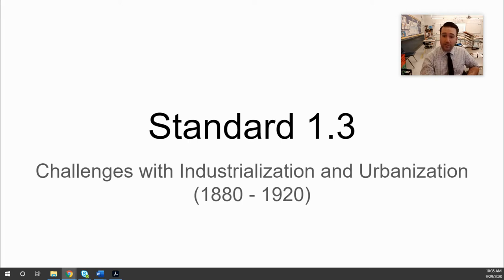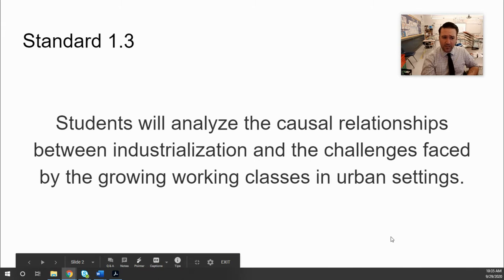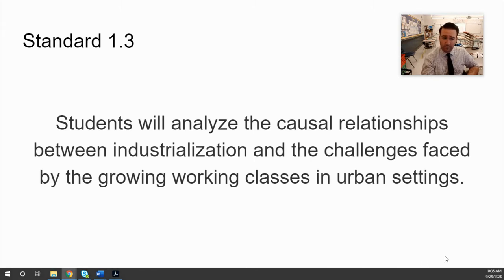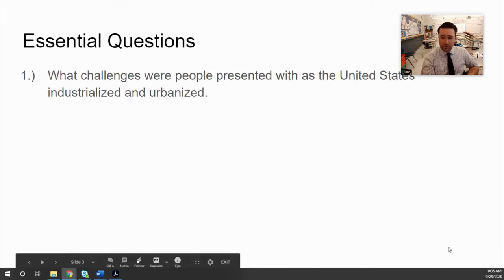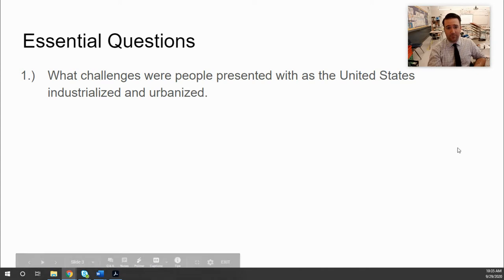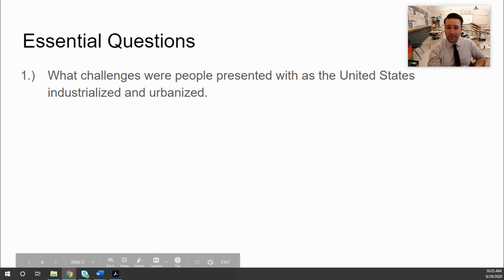Hey everyone, we are on to our next standard for U.S. history. This is going to be dealing with challenges with industrialization and urbanization. Standard 1.3: students will analyze the causal relationship between industrialization and the challenges faced by the growing working class in the urban setting. The central question is: what challenges were people presented with as the United States industrialized and urbanized?